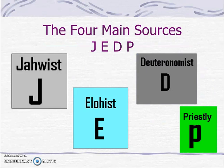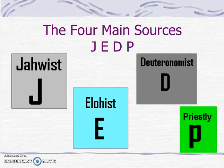According to this theory, the Pentateuch is a weaving together of four main sources. The Yahweh source is labeled J — J in German is pronounced Y and is related to Yahweh. The Elohist source is E, the Deuteronomist source is D, and the priestly writings is P.